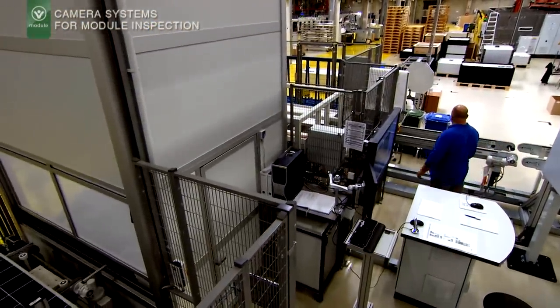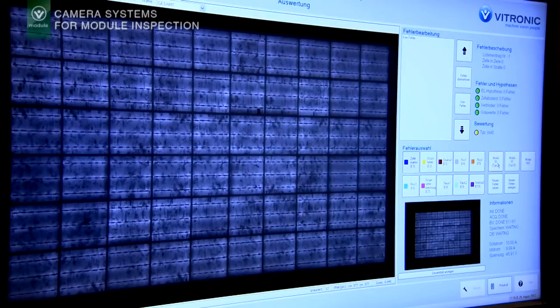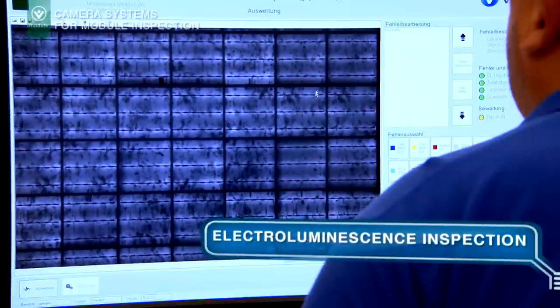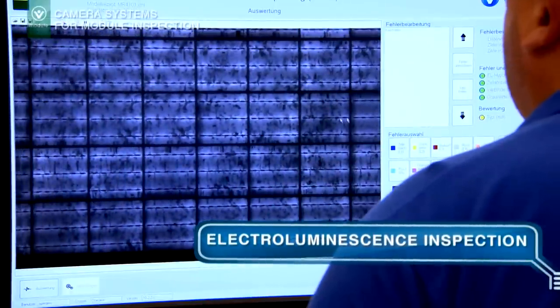During final inspection in the flasher, Vinspec Solar Module determines the power output of each individual cell and the entire module using electroluminescence.